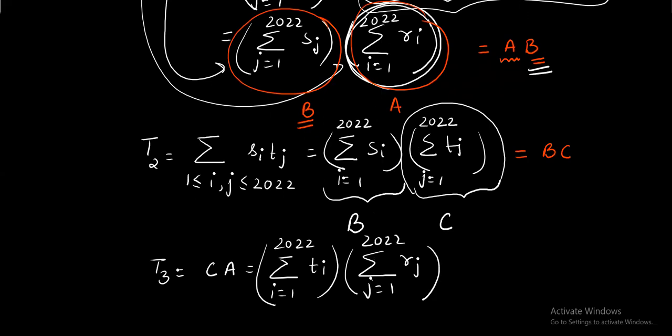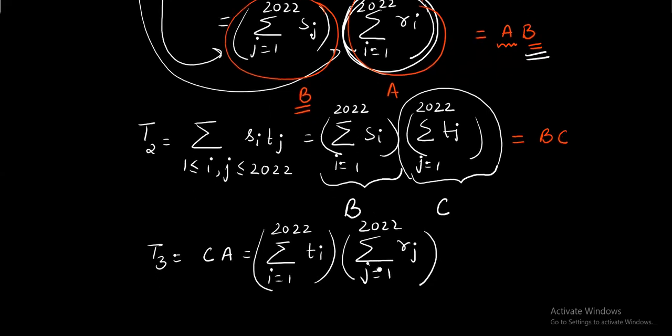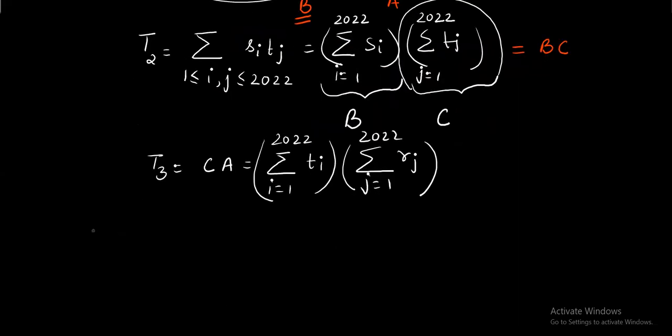So what is the question? The question says that you just need to find out T_1 plus T_2 plus T_3 which actually converts to AB plus BC plus CA. Do we have the value of A, B, C individually? Yes we do, just because of the equations they have provided us.